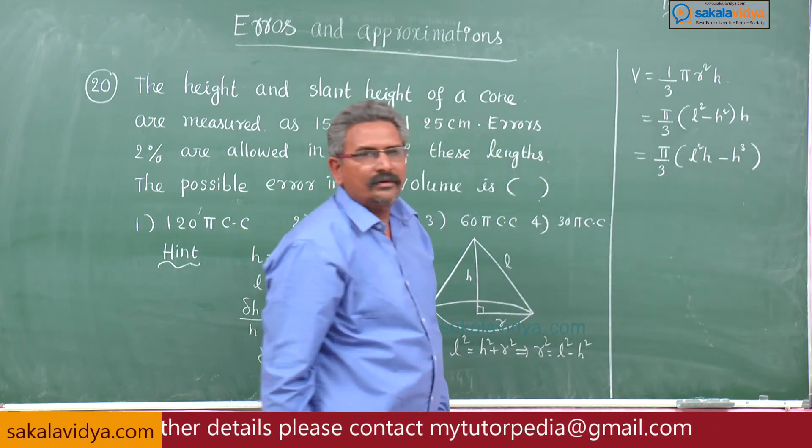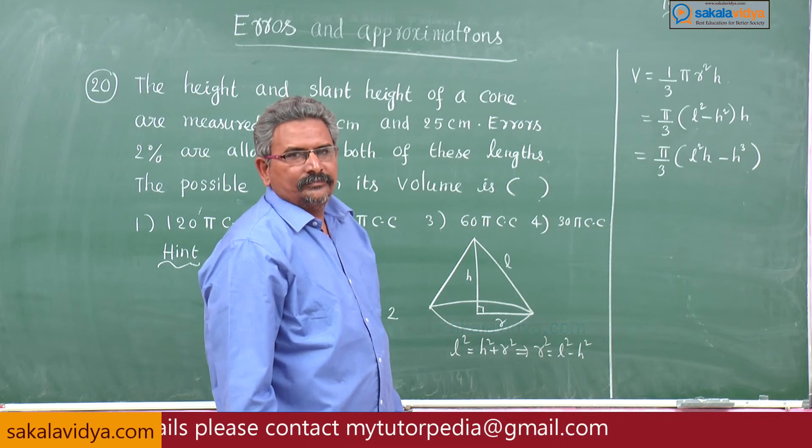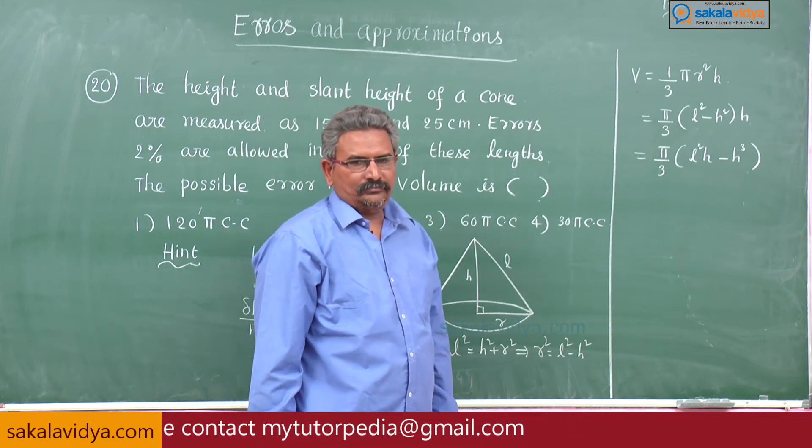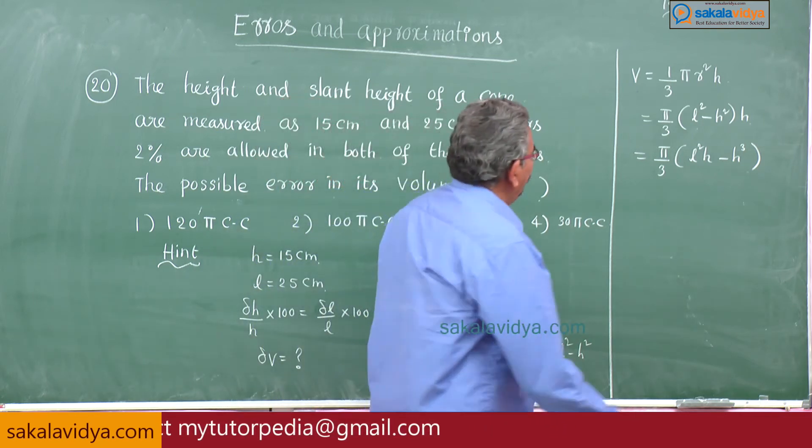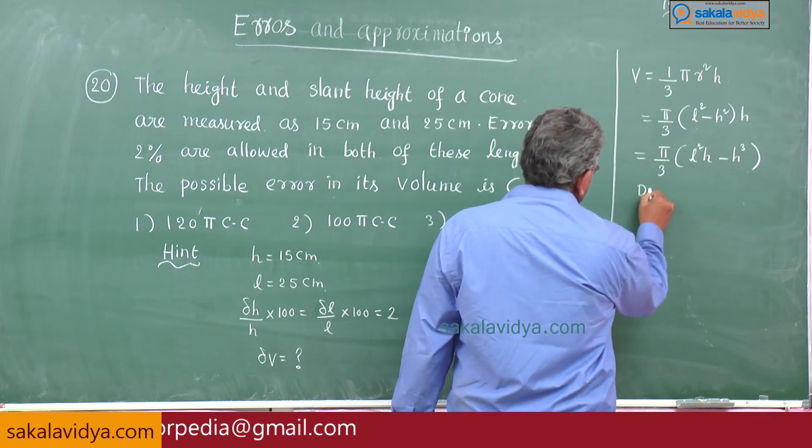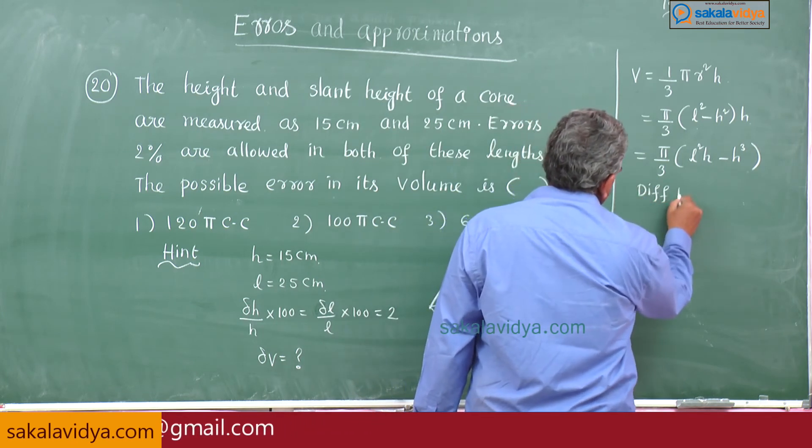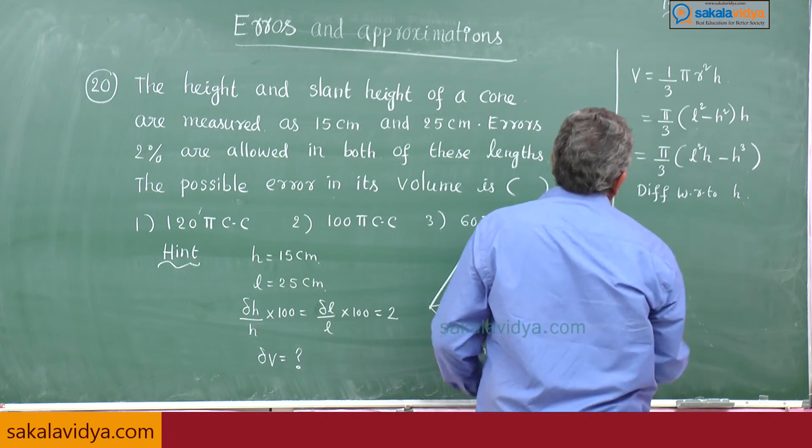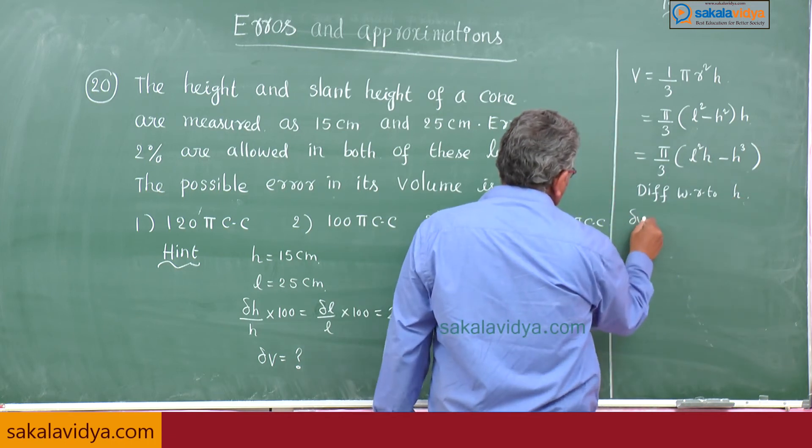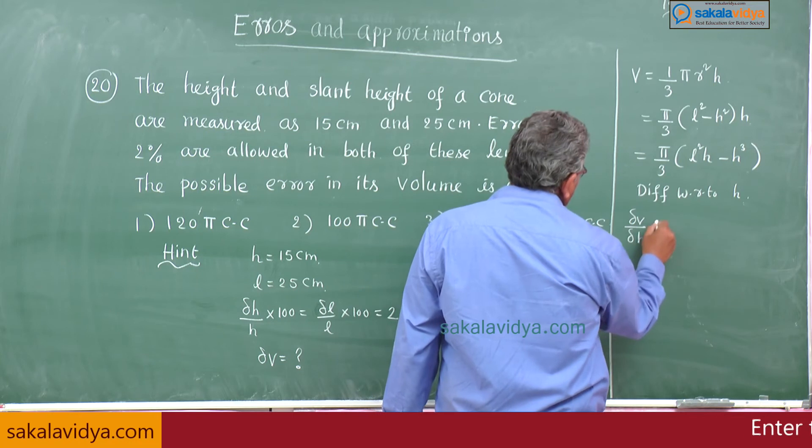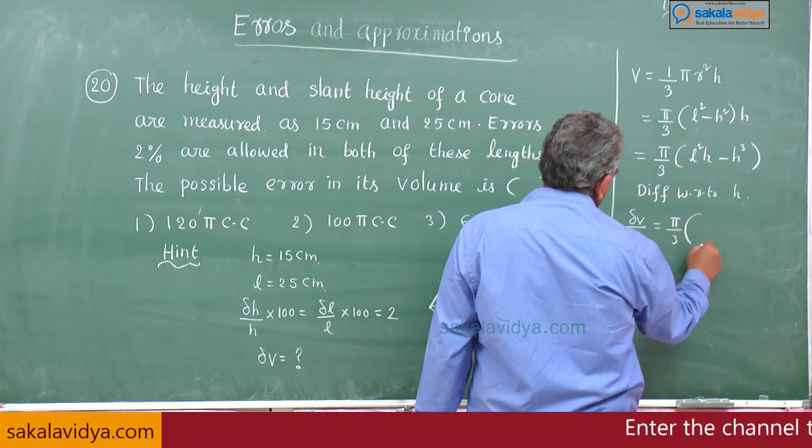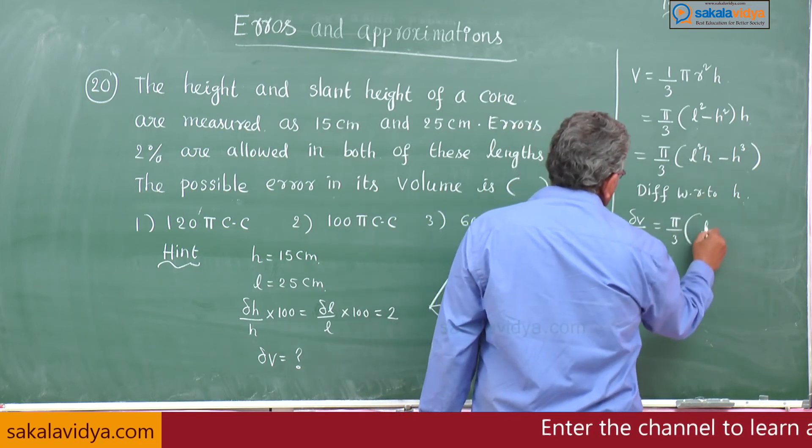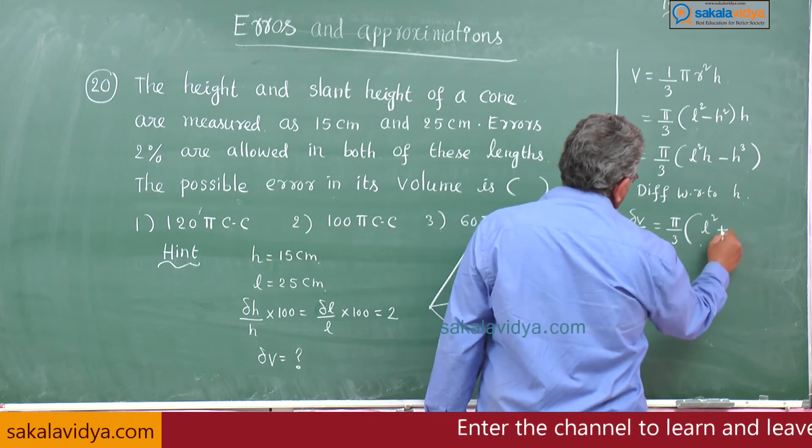π by 3 into l square h minus h cube. This is u-v method: l square h differentiation 1 with respect to h.